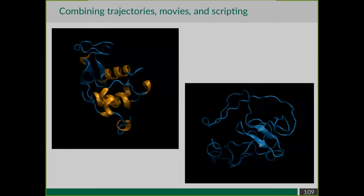Here on the left is the first frame showing our lysozyme folded with alpha helices. On the right is the last frame where the protein has been unfolded - almost no helices and very little secondary structure remaining. We can also see that we rotated around the Y axis throughout the trajectory, and the secondary structure calculation was updated at each frame.